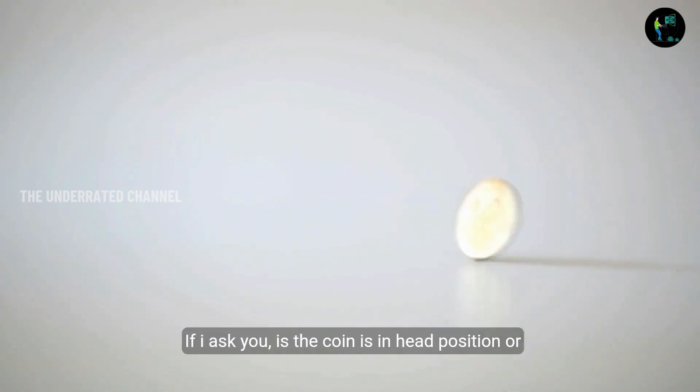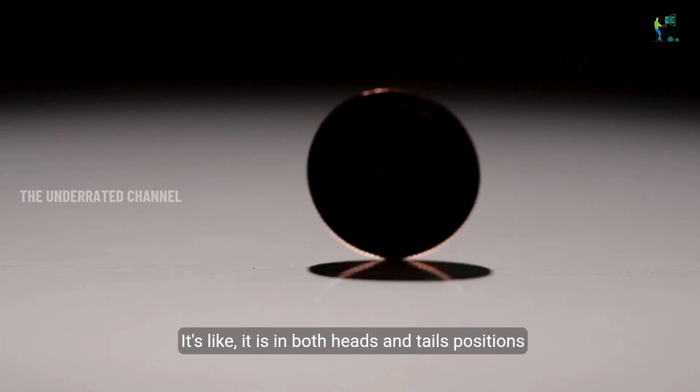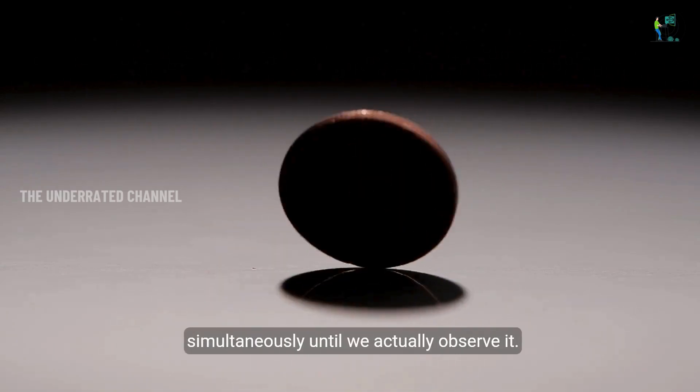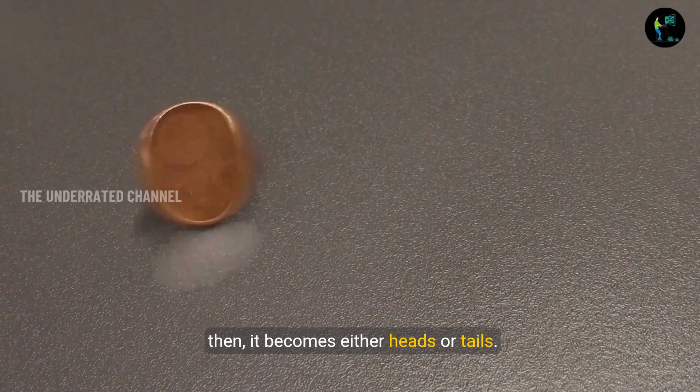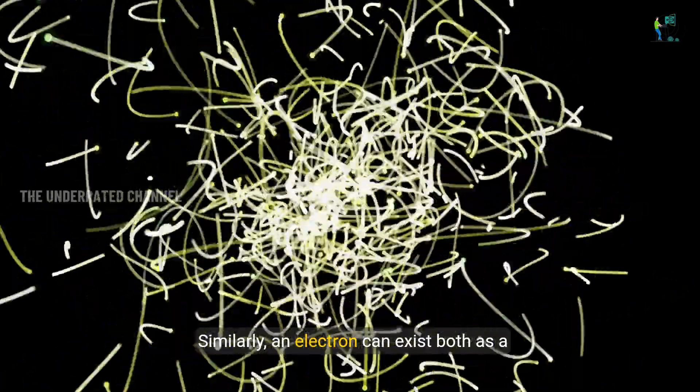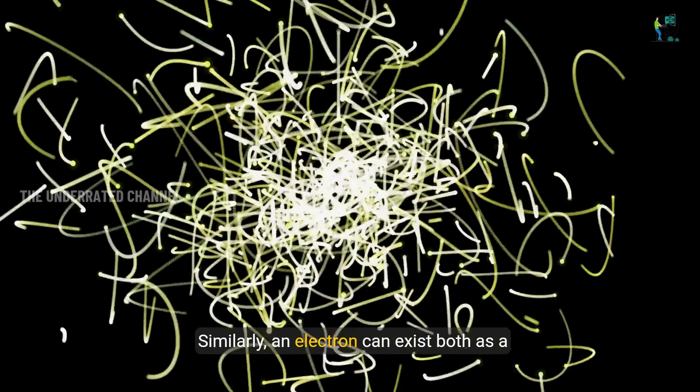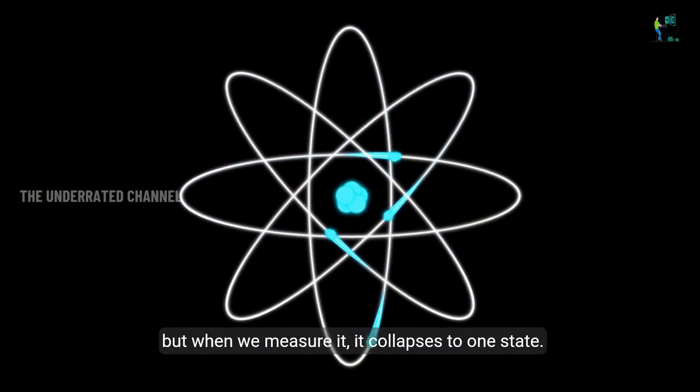Let's look at an example. Imagine we flip a coin, and if I ask you if the coin is in head's position or in a tail's position, you cannot tell that, right? It's like it's in both head and tail positions simultaneously until we actually observe it. Then it becomes either heads or tails. This is the superposition state. Similarly, an electron can exist both as a particle and a wave simultaneously. But when we measure it, it collapses to one state.